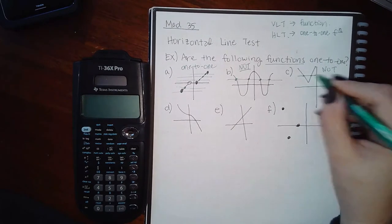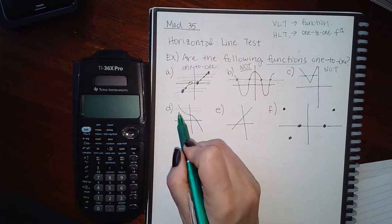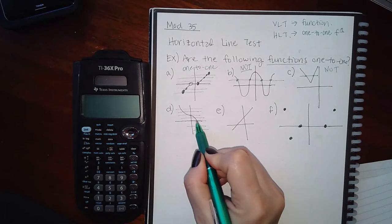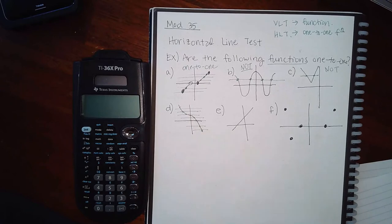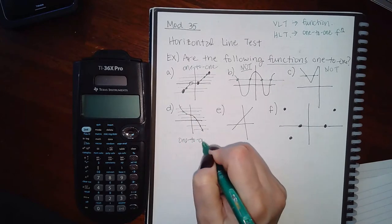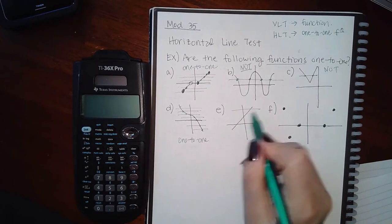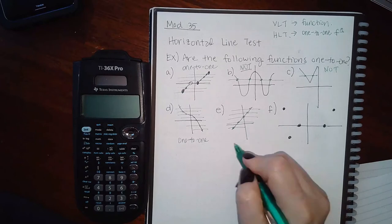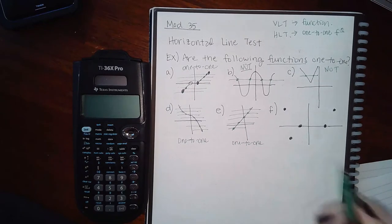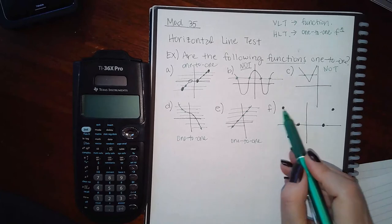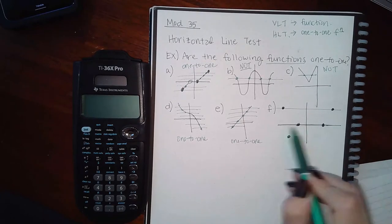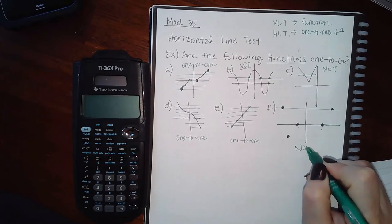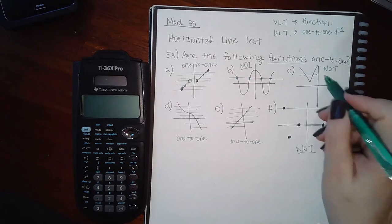Here, if I draw a horizontal line it hits it twice, so this is not one-to-one. On the next graph, no matter how many horizontal lines I draw, each one only touches the graph one time, so this one is one-to-one. Same for the following graph — every line only touches one time, so it is one-to-one. On the last one, a horizontal line on the x-axis touches it twice, which means this is not one-to-one.